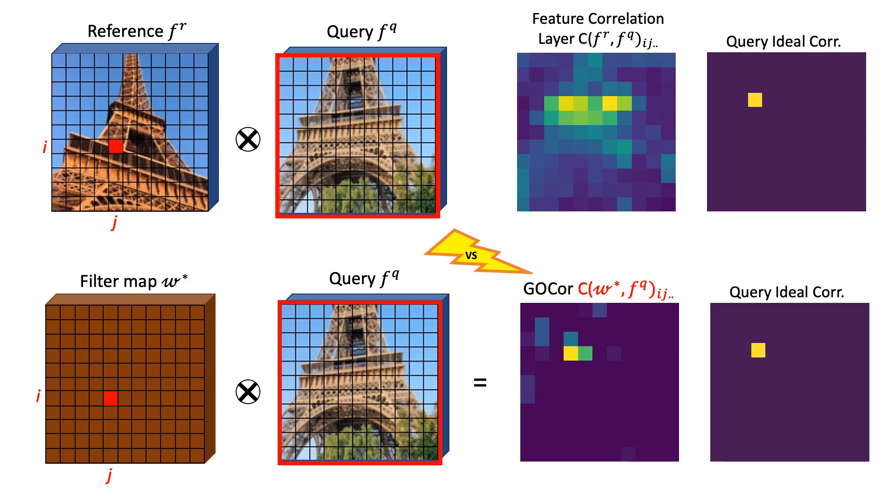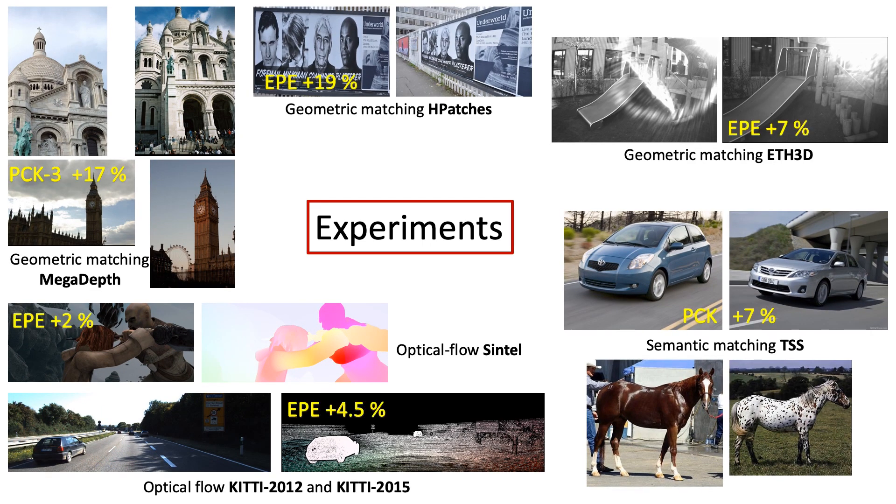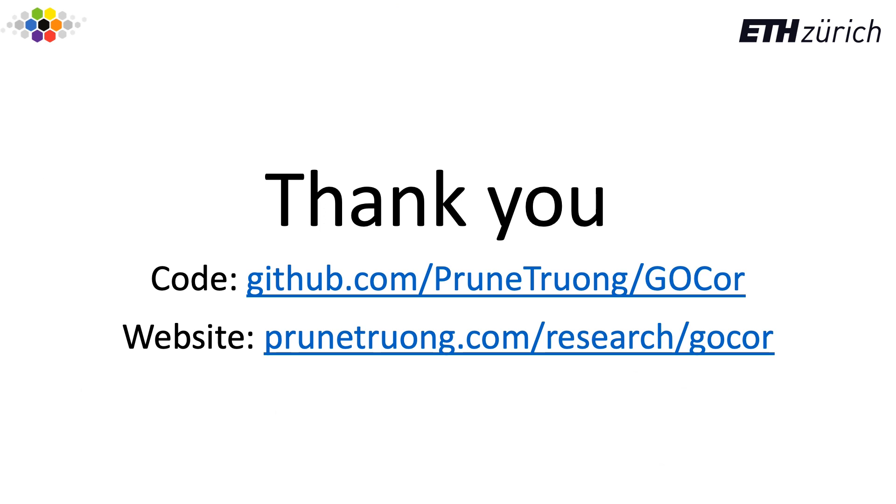As you can see, our GoCore produces much cleaner and more accurate correspondence volumes than the feature correlation layer. We integrated GoCore into two popular architectures, PWCNet and GLU-Net. On multiple tasks and datasets, GoCore achieves state-of-the-art results. Thank you!